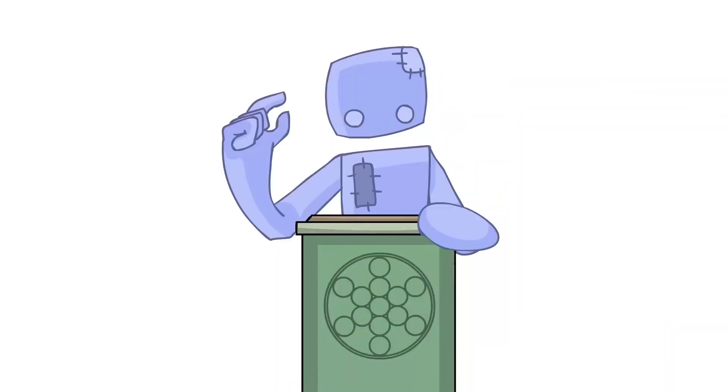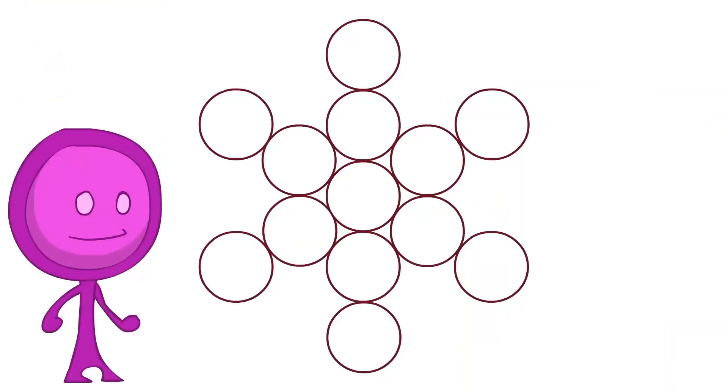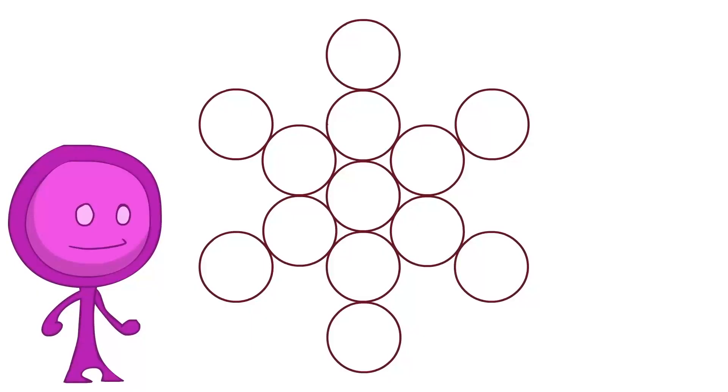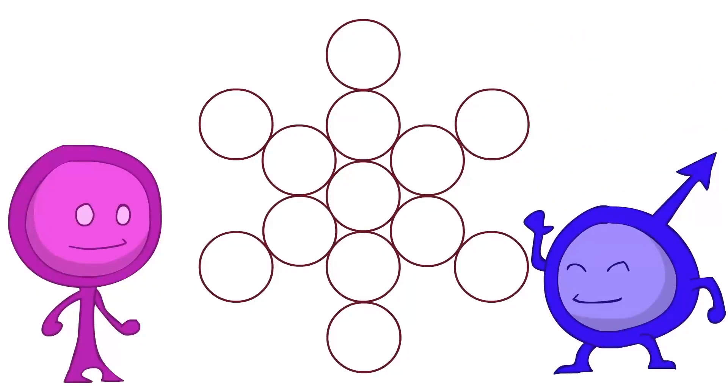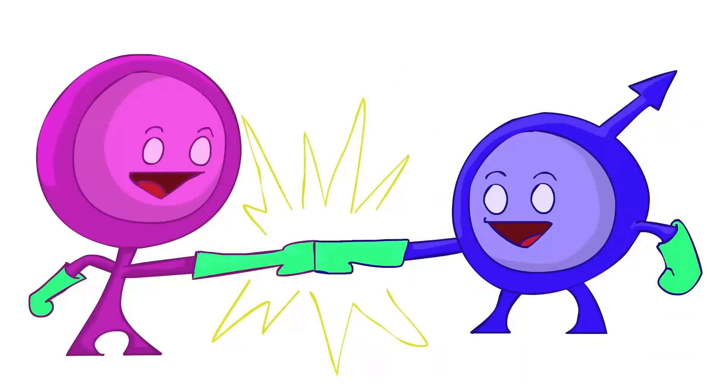Remember when we talked about male and female energy, lesson four? As you can see, this image is female. It has no straight lines. However, when you combine male lines with these female circles, something amazing happens.